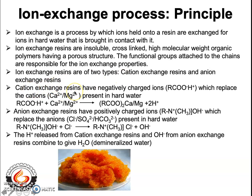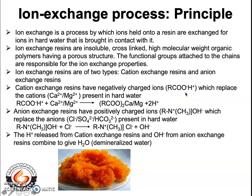Cation exchange resins have negatively charged functional groups. One example is the acid functional group RCO⁻ with H⁺ ions. The RCO⁻ represents the negatively charged ions present in the cation exchange resin. This is one typical example of a functional group attached to a cation exchange resin.